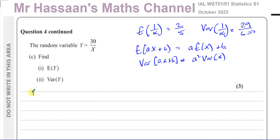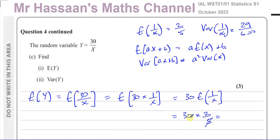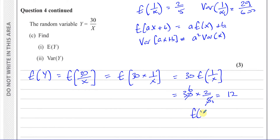E(Y) is the same as E(30/X), which equals E(30 × (1/X)). Using our transformation rule, this is 30 × E(1/X). Since E(1/X) = 2/5, we get 30 × (2/5). Cancelling: 30/5 = 6, so 6 × 2 = 12. Therefore E(Y) = 12.